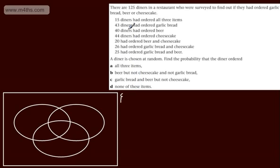The place we need to start with this one is the intersection of all three. And that's where 15 diners had ordered all three items. So if we call this one beer, cheesecake, and garlic bread, in the intersection we've got 15 diners. And they will go just there. They have ordered all three.